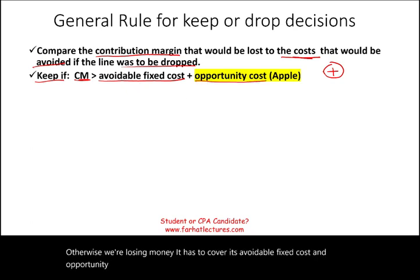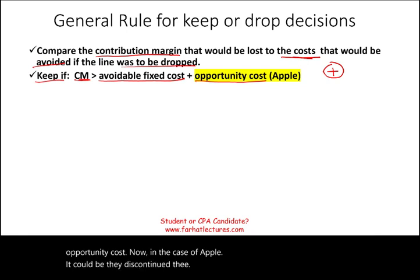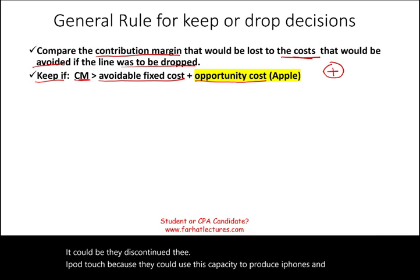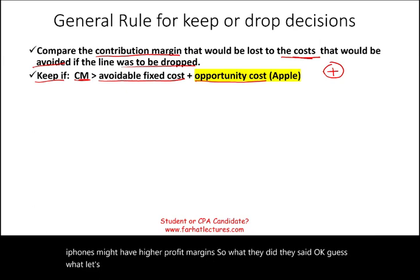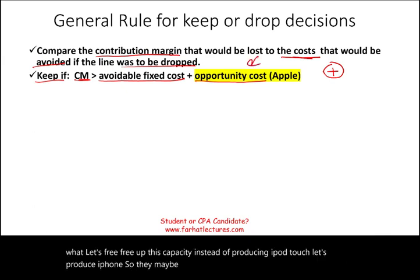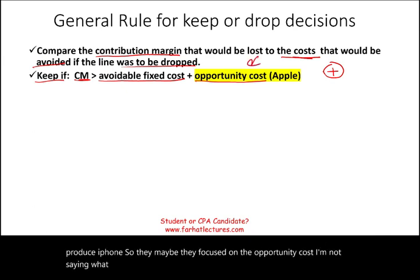In the case of Apple, they may have discontinued the iPod Touch because they could use that capacity to produce iPhones, which might have a higher profit margin. So they said, let's free up this capacity — instead of producing iPod Touch, let's produce iPhones. That's an example of what an opportunity cost would look like in this context.